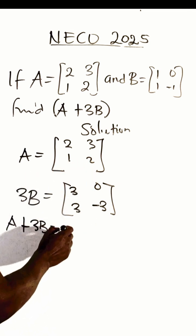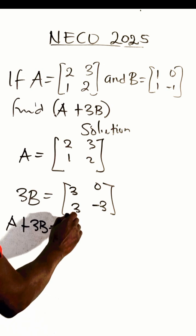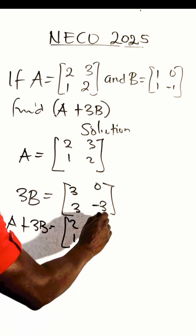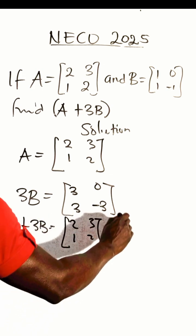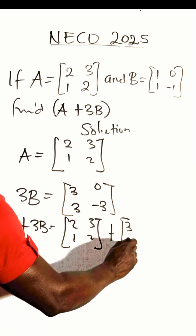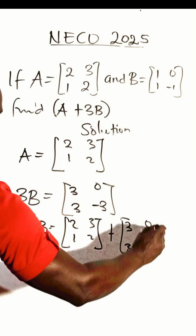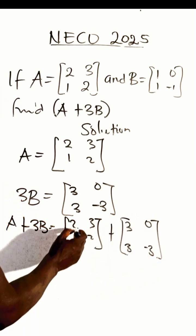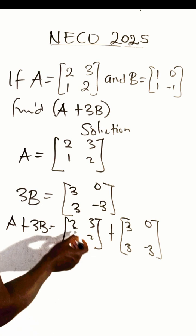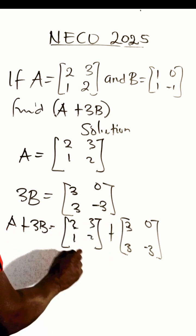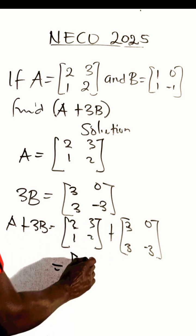That will be 2, 1, 3, 2 plus 3, 3, 0, minus 3. Now to add this we add according to the positions: 2 plus 3, you form a new matrix where you have these elements here as 2 plus 3.